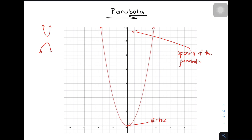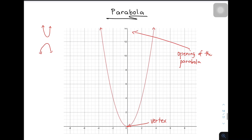Another thing na kailangan niyong matandaan about the parabola is yung tinatawag nating axis of symmetry. Sa graph natin, since yung y-axis ay nasa gitna ng parabola, that is considered as the axis of symmetry. Usually yung ating axis of symmetry ay naka-broken line. In this parabola, yung ating axis of symmetry ay yung y-axis.